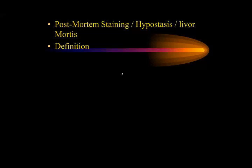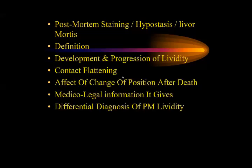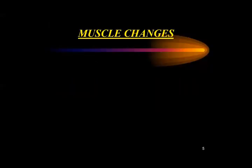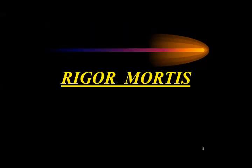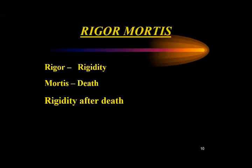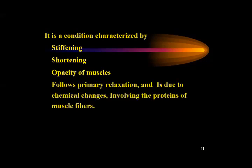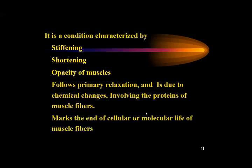Today's lecture is regarding rigor mortis and the muscular changes. Rigor means rigidity and mortis means death — so rigor mortis means rigidity after death. It is a condition characterized by stiffening and shortening of the muscles, opacity of the muscles. It follows primary relaxation and is due to chemical changes involving the proteins of the muscle fibers. It marks the end of cellular or molecular life of muscle fibers.